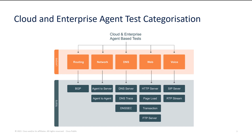Network layer tests are aimed at measuring network performance between either the agent and a target server, or agent to agent. A typical agent-to-agent use case would be monitoring performance between two sites, such as a campus network and a branch site. Agent-to-server tests are useful for understanding the path taken to reach a destination, and you can also measure VPN performance between sites.